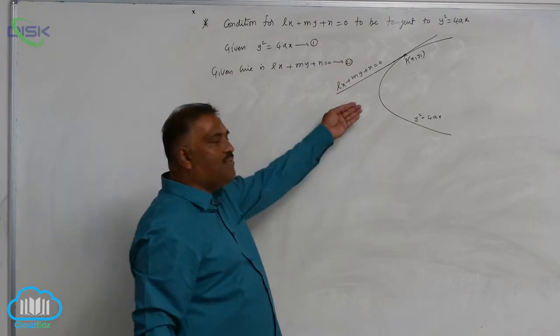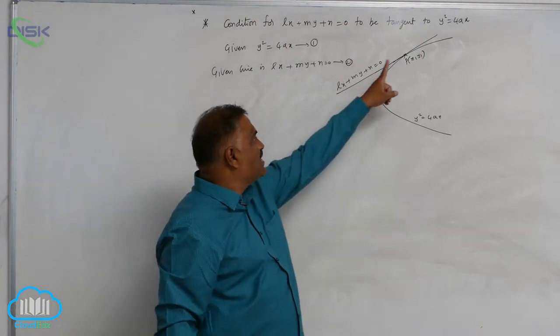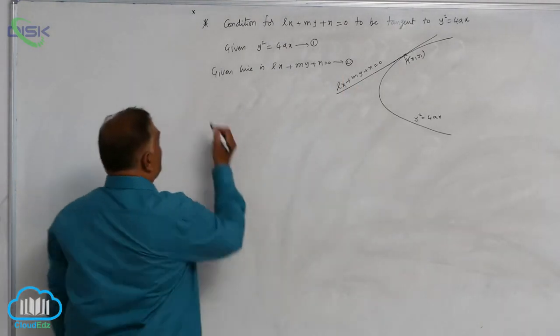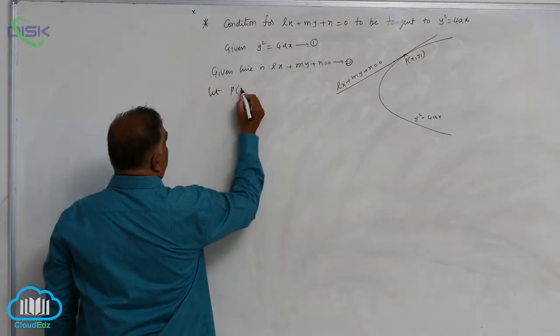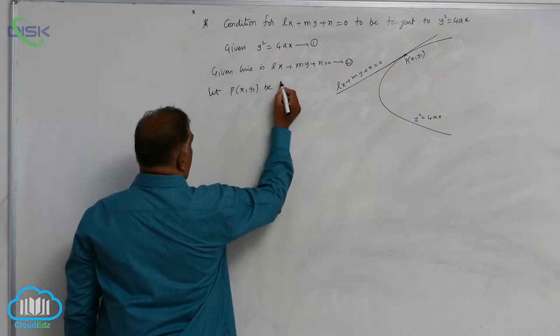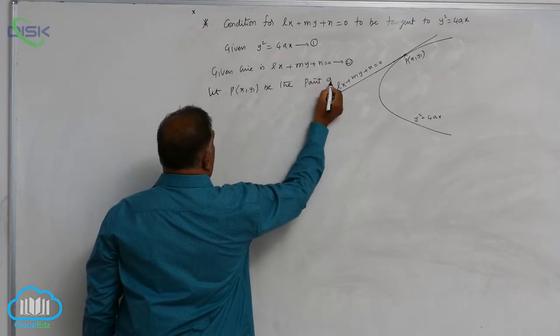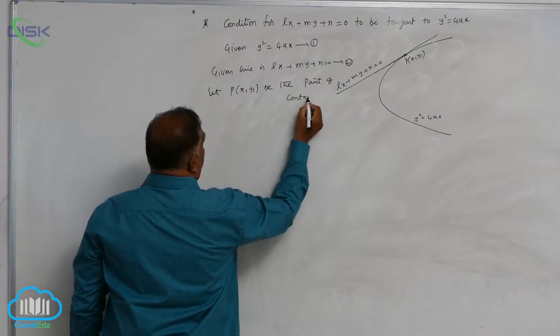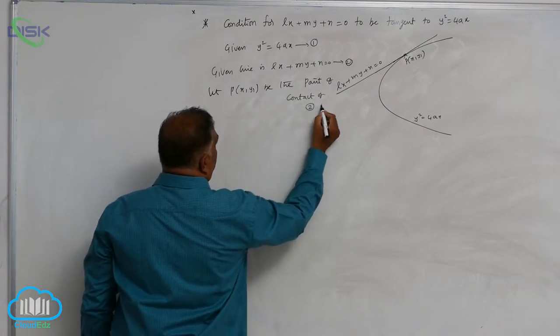We see from the figure this line touches the curve at px1 y1. Let px1 y1 be the point of contact of 2 with 1.